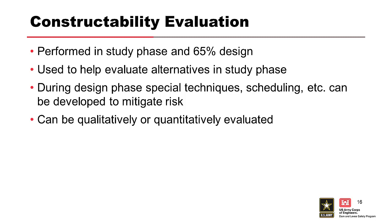All construction risks must be identified and properly mitigated with the objective to reduce them to tolerable levels. During design, special elements and specification requirements can be incorporated to mitigate and reduce construction risk. Construction risk can be evaluated using two methods depending on the complexity and level of risk involved — qualitative risk assessments using engineering judgment, and quantitatively using event trees.